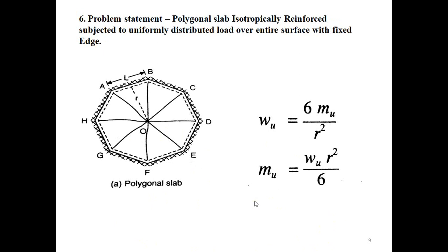The sixth problem statement is a polygonal slab, isotropically reinforced, subjected to uniformly distributed load over its entire surface with fixed edges all around the periphery. The span is L and the radius is r. The moment is calculated using mu = wu·r²/6, and the load using wu = 6·mu/r². These two equations give the ultimate moment and ultimate load for a polygonal shape.